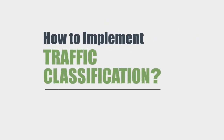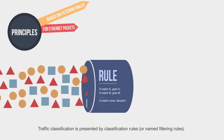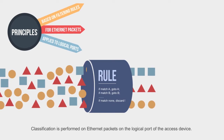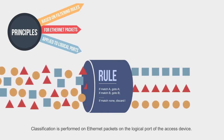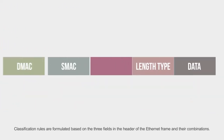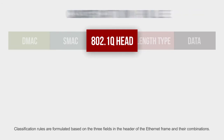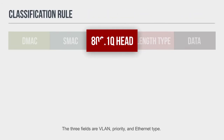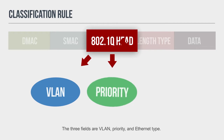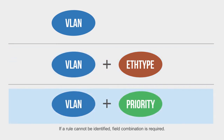How to implement traffic classification? Traffic classification is presented by classification rules, also named filtering rules. Classification is performed on Ethernet packets on the logical port of the access device. Classification rules are formulated based on the three fields in the header of the Ethernet frame and their combinations. The three fields are VLAN, Priority, and Ethernet type. If a rule cannot be identified, field combination is required.